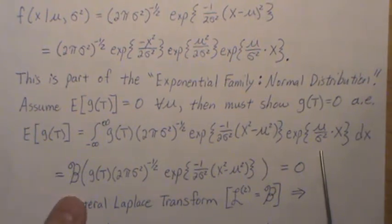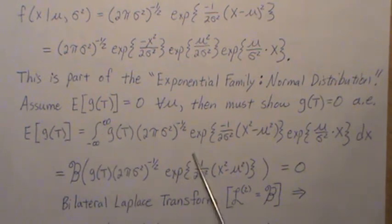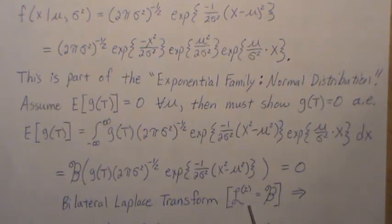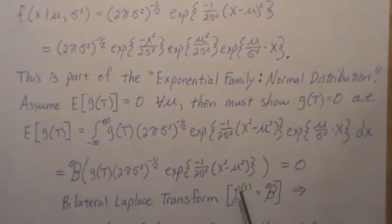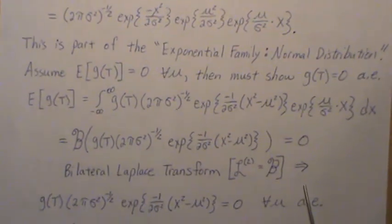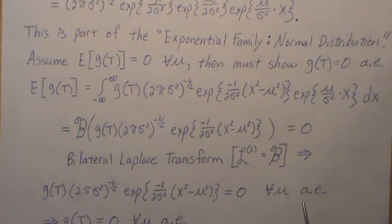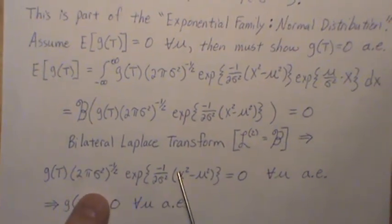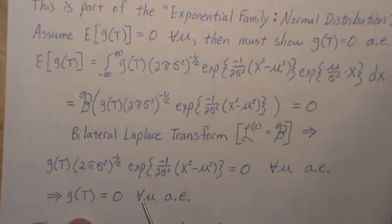Because this bilateral Laplace transform equals zero, that implies that everything inside is zero almost everywhere — except on a set with probability zero. This expression is positive so we can divide it over, and that implies g of t equals zero for all mu almost everywhere. Thus t is complete for mu.